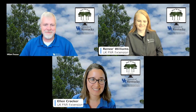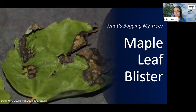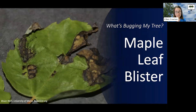You might be seeing this on your trees, whether they are trees in your woods or trees in your landscape. Today I'm going to be talking about maple leaf blister. If you're noticing black leaves on your red or silver maple in the early summer, it could be maple leaf blister, which is a fungal foliar disease that can cause dead leaves, dead patches on your leaves, and sometimes defoliation — the dropping of those leaves.